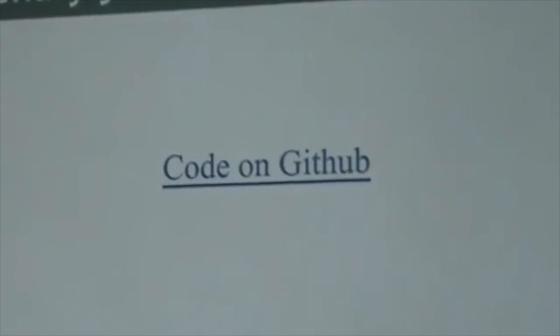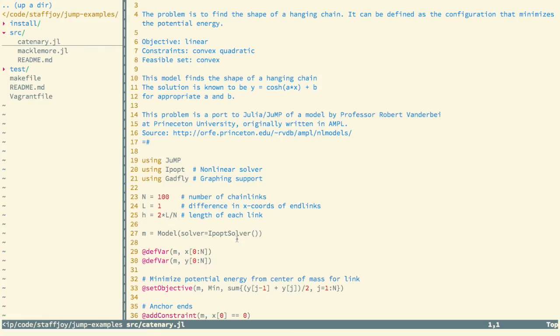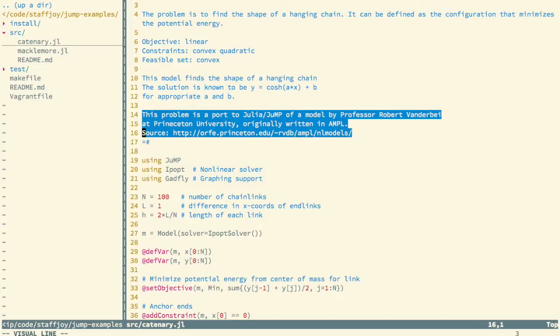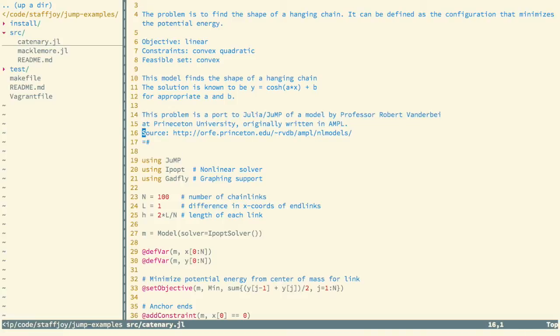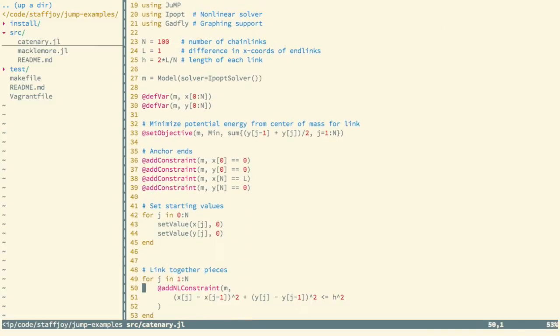Let's pull up the code here. I adapted this from code I found from a professor at Princeton University. You can see his original code, which is in AMPL. It's available online, but this is also in the repo I published. We're going to go through, we're going to import JUMP.